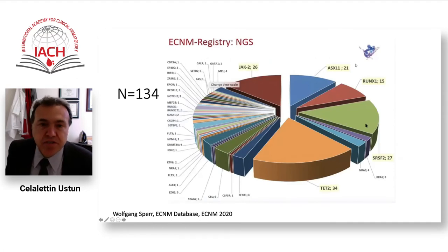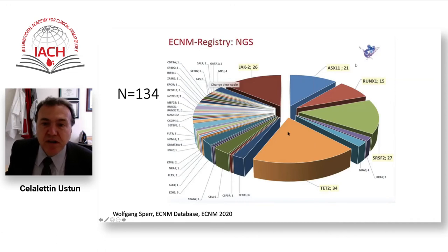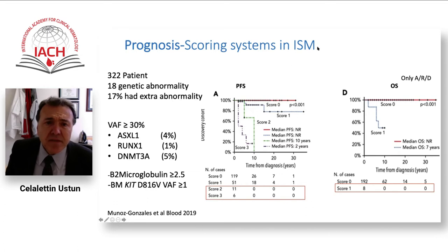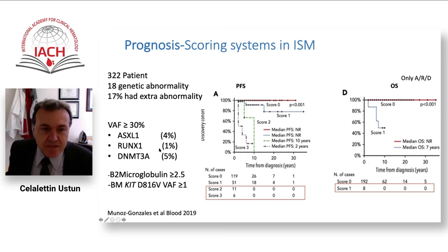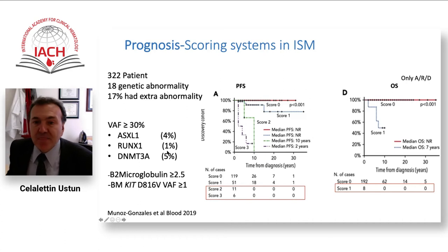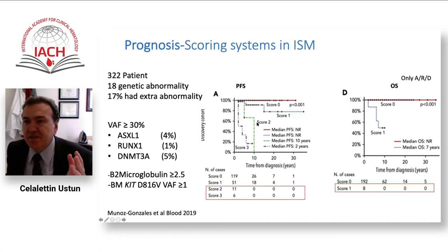KIT D816V mutation is not the only one. Studies show molecular heterogeneity: JAK2, ASXL1, RUNX1, SRSF2, and TET2 mutations are common and affect outcomes. In indolent SM, if ASXL1, RUNX1, DNMT3A were present in addition to beta-2 microglobulin elevation and KIT D816V VAF greater than 1%, survival significantly changed by scoring system. These extra mutations in indolent SM were thankfully rare, but if present, they increase risk score and the patient's survival declines.